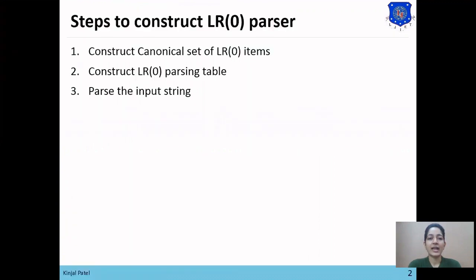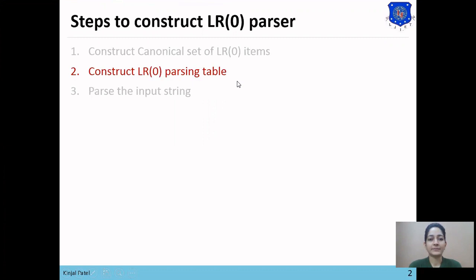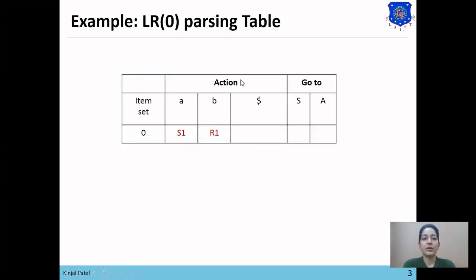In last lecture, we started one example of LR0 parsing, performed the first step, and constructed the canonical set of LR0 items. Now in this lecture, we will construct the LR0 parsing table. Before learning the rules to construct the LR0 parsing table, we will see the layout of the table.